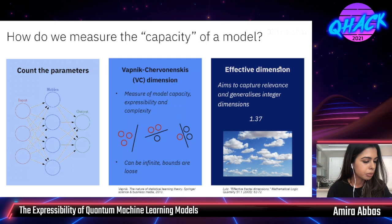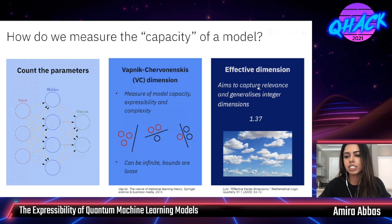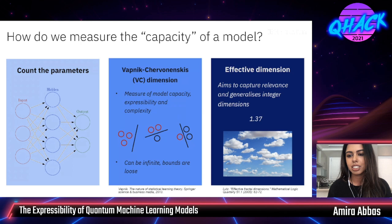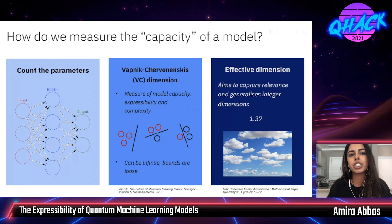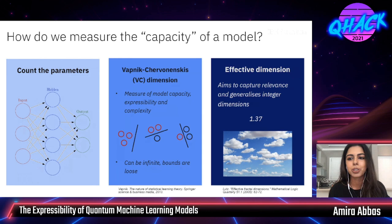Lastly, there's the effective dimension, which has been around for a long time but is relatively new in a machine learning context. I like it because it has a beautiful intuition. You can represent it with a picture of clouds in the sky: clouds are embedded in three-dimensional space, but the space they actually occupy — their effective dimension — is 1.37. So the effective dimension tries to capture which of a model's parameters are actually being used and where there's redundancy, rather than blindly counting all parameters.